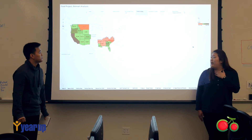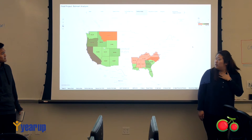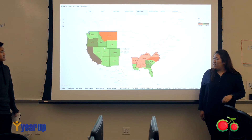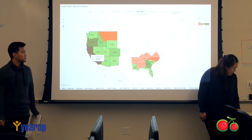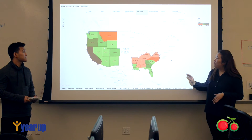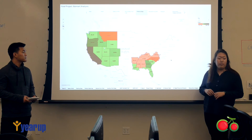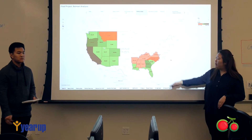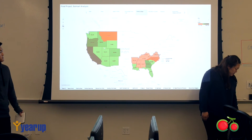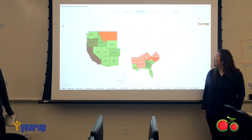To get a better understanding, we took a better look at profit by state. We took the map and wanted to see which states were creating profit and which were losing profit. As you can see, California makes the most amount of profit, and North Carolina is losing the most amount of profit.